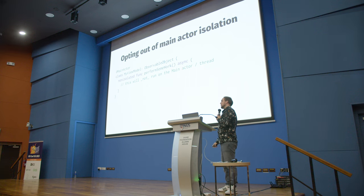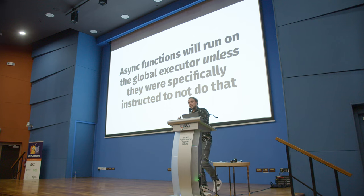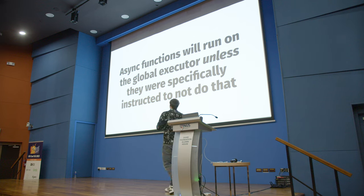We might decide that everything in the ViewModel except one function should be on the main thread. We can opt out by marking a function as nonisolated. If the function does a bunch of slow stuff, we don't want to perform all that work on the main actor, so we just mark it as nonisolated, which moves it away from the main actor. The rule of thumb: async functions will run on the global executor unless specifically instructed not to, either by marking them as @MainActor or marking their owner as @MainActor.